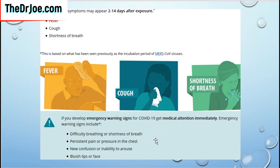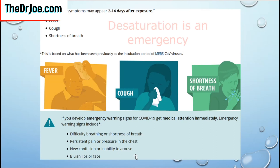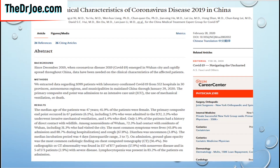Of course, we talked about shortness of breath and persistent pain in the chest. If somebody is becoming confused or difficult to arouse — that is to say they're drowsy — they also need medical attention. If they're becoming blue in the face or lips, that suggests they are desaturating, or deoxygenating to use a layman's term. Desaturation means their blood is not carrying enough oxygen, and that is usually an emergency.